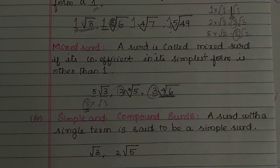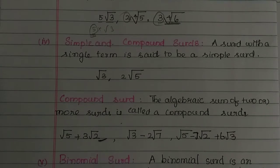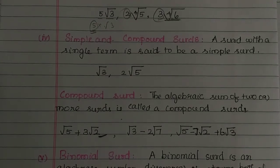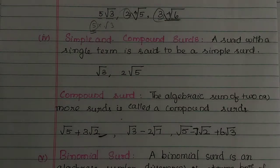Next we have simple and composite surds. A surd with a single term is called a simple surd. Simple surds are just single-term expressions, similar to how we use single terms in algebra.